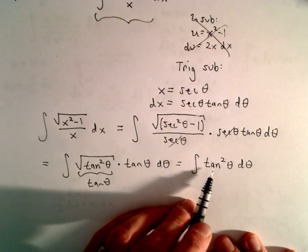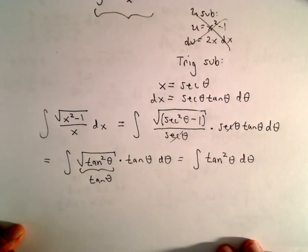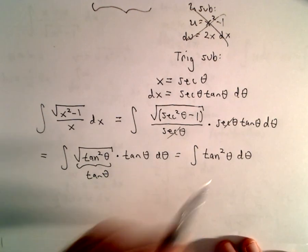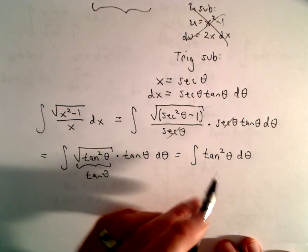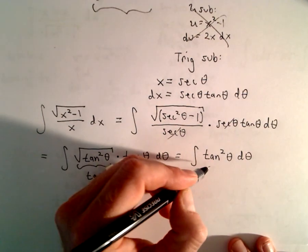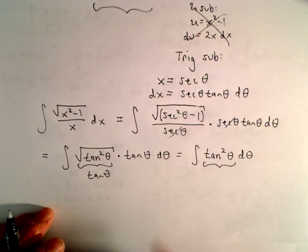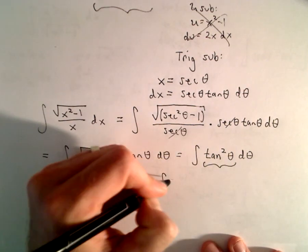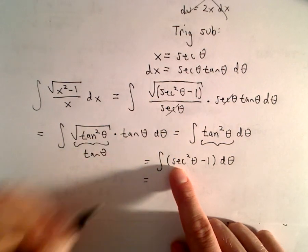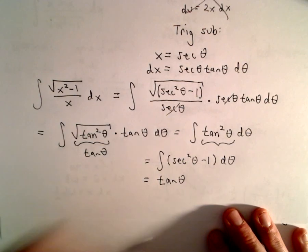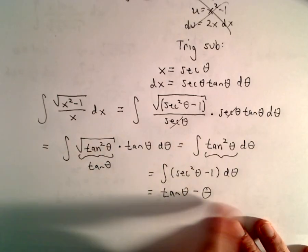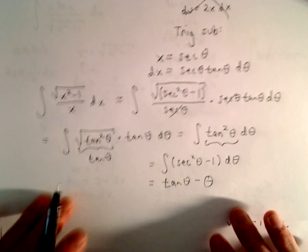Now the new issue is integrating tan²θ. I don't know a trig function whose derivative is tan²θ off the top of my head. The key is using the trig identity: tan²θ = sec²θ - 1. Because I know an antiderivative of sec²θ — that's just tan(θ). And the antiderivative of -1 is -θ. So the integral of tan²θ dθ = tan(θ) - θ.